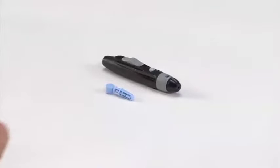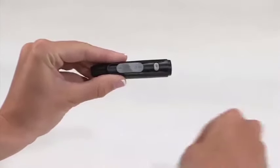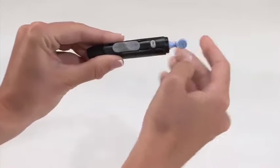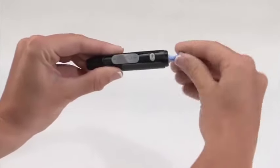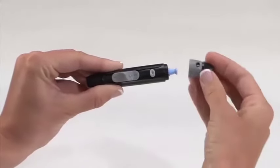First, remove the lancing device cap by snapping it off at an angle. Insert a new lancet firmly into the blue lancet holder. Twist off the lancet cover. Replace the cap until it snaps or clicks into place.